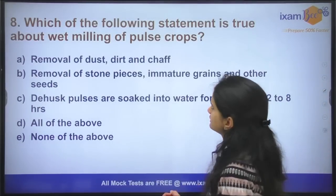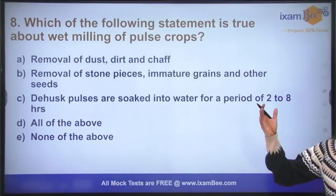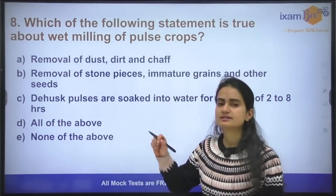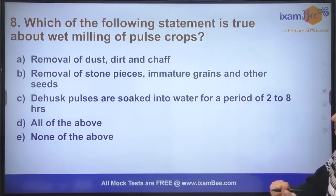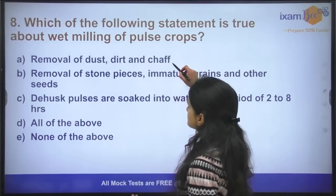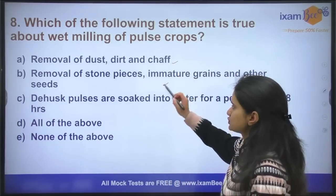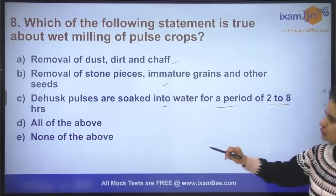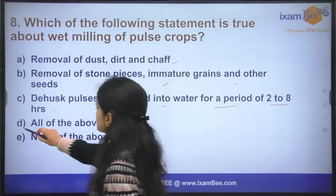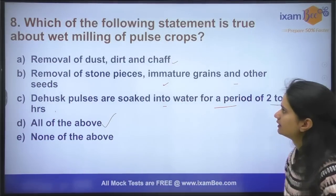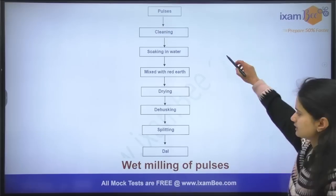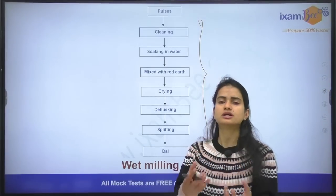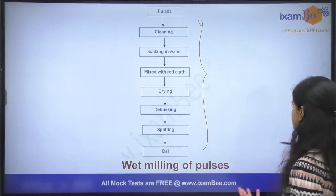Which of the following statements is true about the wet milling of pulses? In pulses, wet milling and dry milling are two types. The options are: removal of dust, husk, and chaff; removal of stone pieces; removal of immature grains and other seeds; husk of pulses soaked in water for a period of two to eight hours; or all of the above. The answer is all of the above — these methods are all part of the wet milling process, done to make pulses more consumable for the consumer.